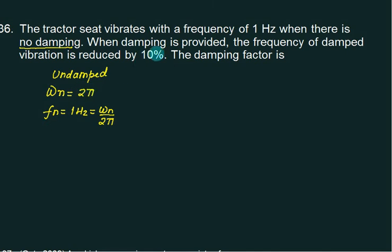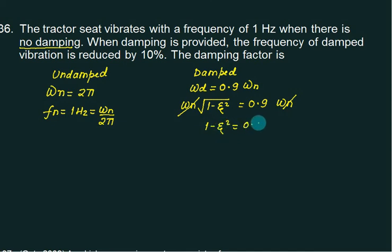When damping is provided, we have damped system. The frequency of damped vibration omega d is reduced by 10%. So it's 0.9 of the previous value. Omega n under root of 1 minus zeta square equals 0.9 into omega n. Omega n cancels out. We can square this term. We get 1 minus zeta square equals 0.81, and then solve for zeta.